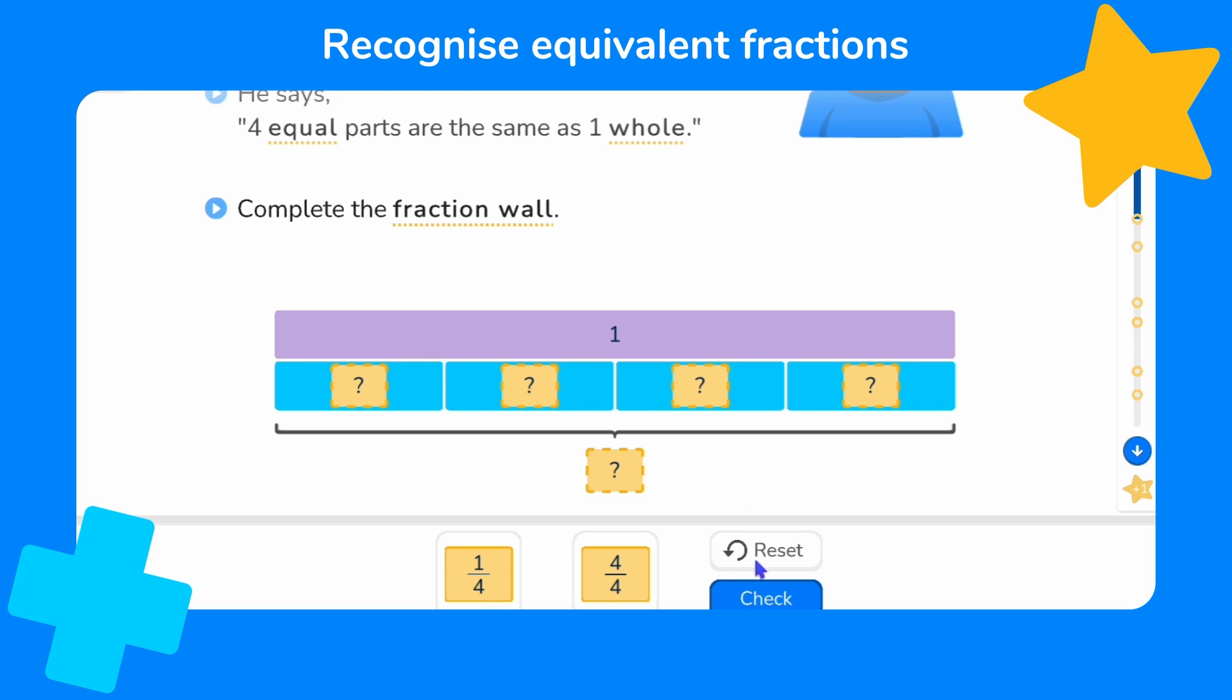Which of these labels represents one out of four? Well it's this fraction here which has a one above the line, the numerator, and a four below the line which we call the denominator. So this fraction we call one quarter. And each of these parts is one quarter.